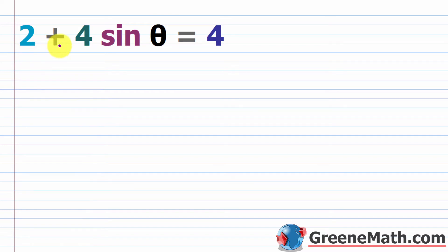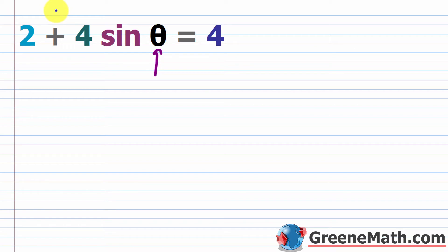Let's say you had something like 2 plus 4 times the sine of theta is equal to 4. What we're trying to do here is find values of theta that we could plug in to make the equation true.